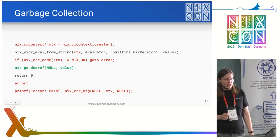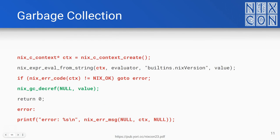On to garbage collection. We have a reference counter for every value you get from the Nix API. As long as the internal reference counter is higher than zero, the API keeps your value around. When you're done with a value, you have to decrement the reference counter and at some point it will be gone. You also have to do this for errors. The reference counter works out nicely in everything except C — and maybe even in C you can make it look nice with attribute finalize, though that might be evil.